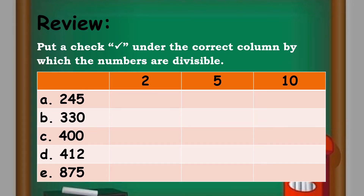Let's have our review. Put a check under the correct column by which the numbers are divisible. For letter A, we have 245 — is it divisible by 2? How about 5? How about 10? For letter B, we have 330. Is it divisible by 2? By 5? How about by 10? For letter C, we have 400. For letter D, we have 412. And for letter E, we have 875.